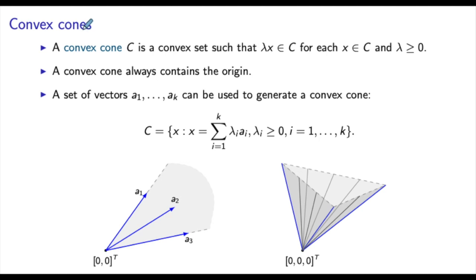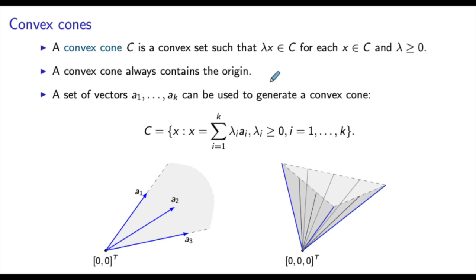A convex cone C is a convex set such that lambda x belongs to C for every x in C and lambda greater than or equal to zero. Essentially, whenever you take a point from this convex cone and multiply it by a non-negative scalar lambda, the resulting point also belongs to the cone. Because of this definition, taking lambda equal to zero implies that the origin always belongs to a convex cone.